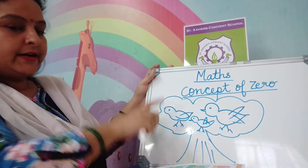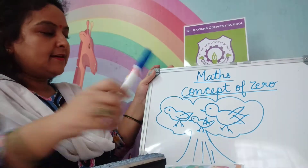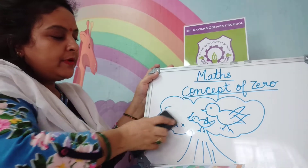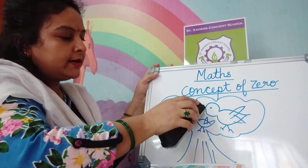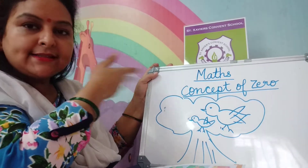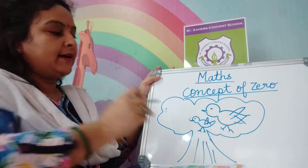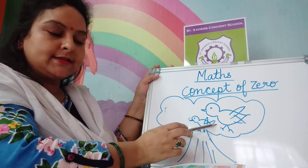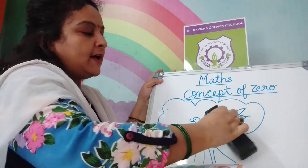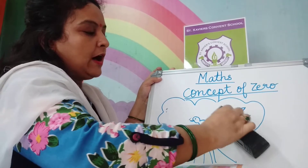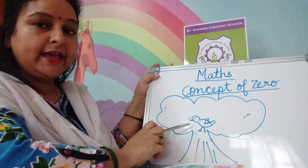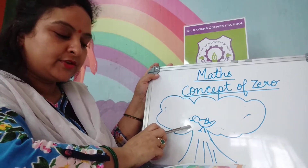One bird flies away. Now there are how many birds? If one bird flies away, how many birds are here? There are two birds. Now one more bird also flies away. So how many birds are left here? Here is only one bird on the tree.